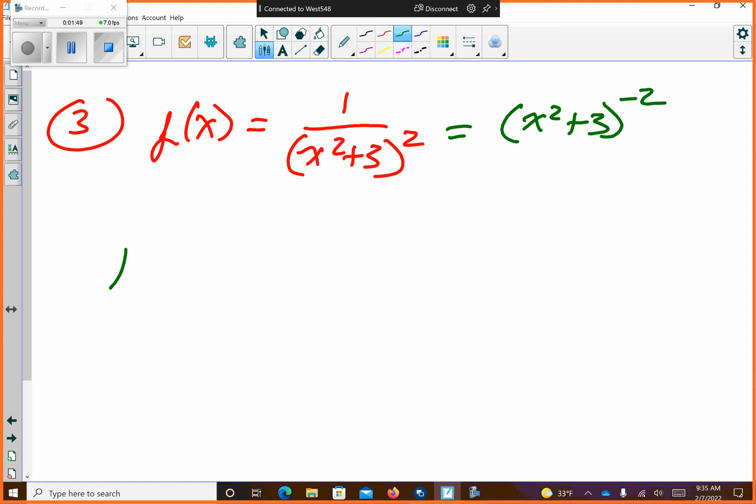So if I do the derivative, do the derivative of the outside, so you get negative 2 times x squared plus 3, subtract 1 from this, so you get negative 3. Take the derivative of the inside, 2x, problem's done. Again, you do not have to clean it up, you can just leave it as is.